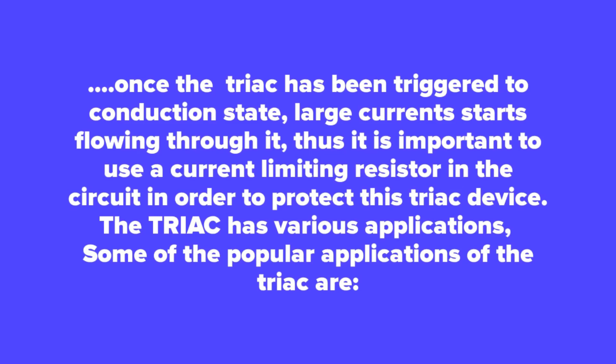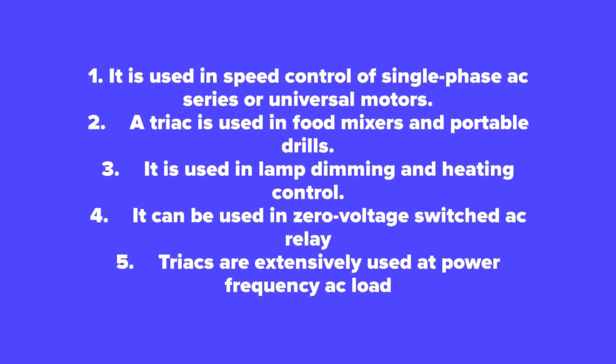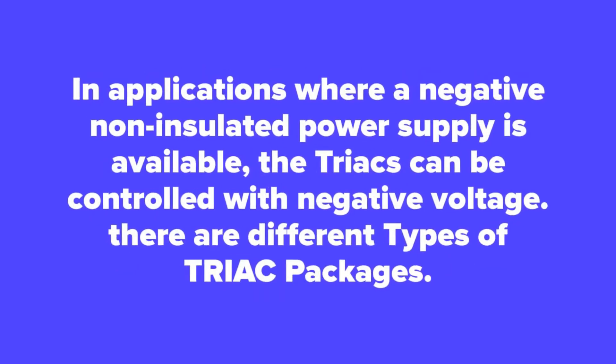The TRIAC has various applications. Some of the popular applications include: 1. Speed control of single-phase AC series or universal motors. 2. Food mixers and portable drills. 3. Lamp dimming and heating control. 4. Zero voltage switched AC relay. 5. TRIACs are extensively used at power frequency AC loads such as heaters, lights, and motor control applications. In applications where a negative non-insulated power supply is available, the TRIACs can be controlled with negative voltage.